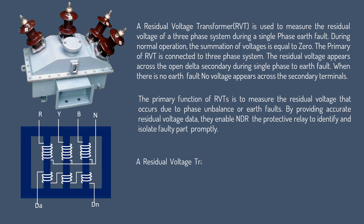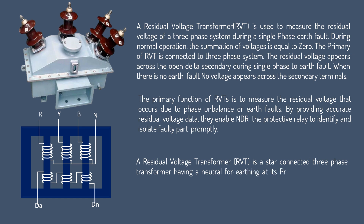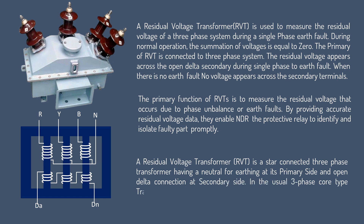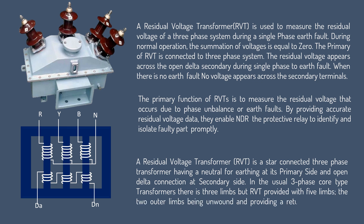A Residual Voltage Transformer (RVT) is a star-connected three-phase transformer having a neutral for earthing at its primary side and an open delta connection at the secondary side. Unlike usual three-phase core-type transformers which have three limbs, RVT is provided with five limbs. The two outer limbs are unwound and provide a return path for zero-sequence flux.